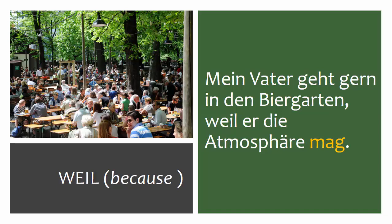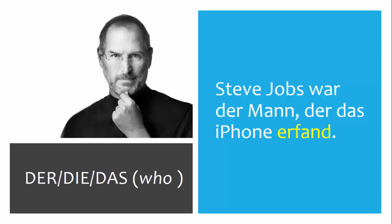Some connectors — for example the connector weil — move the conjugated verb out of second position to the end of the clause. You may know these connectors as subordinating conjunctions. The connectors known as relative pronouns have the same effect on the position of the verb; that is, they move the conjugated verb out of second position to the end of the clause.